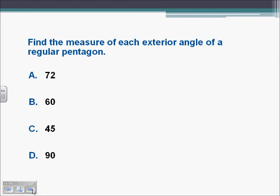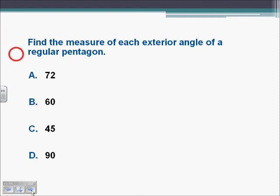Find the measure of each exterior angle of a regular pentagon. A regular pentagon has 5 sides, and since it's regular, all interior angles are congruent — which means all exterior angles are also congruent. So 5 times each angle has to equal 360. There are 5 angles, all equal, so 5x equals 360. Dividing both sides by 5, x equals 72 degrees.